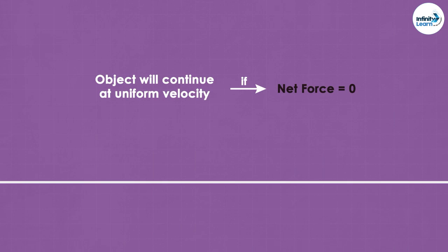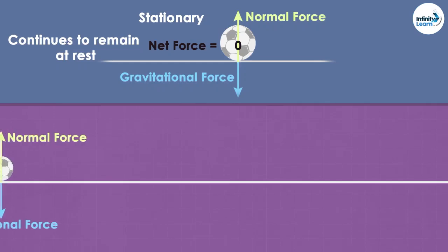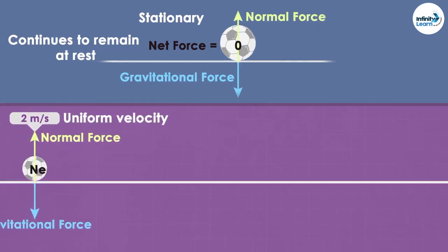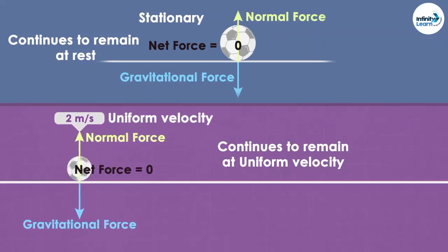There are two things we've learned here. First, if the object is stationary and the net force acting on it is zero, then it will continue to remain at rest. Second, if the object is moving at uniform velocity and the net force acting on it is zero, then it will continue to move at that same uniform velocity.